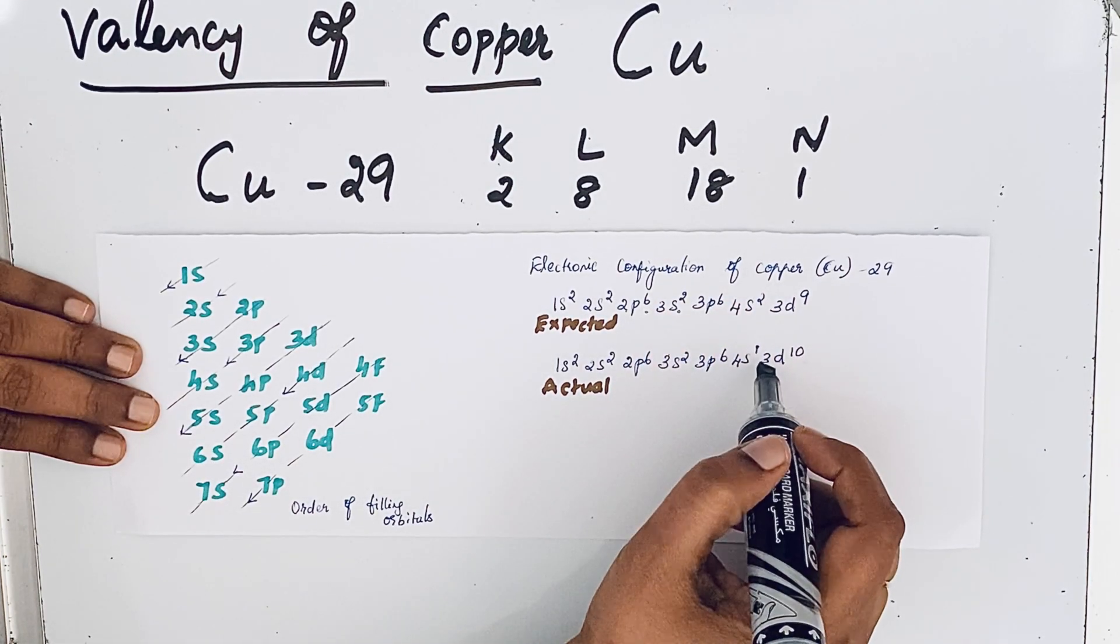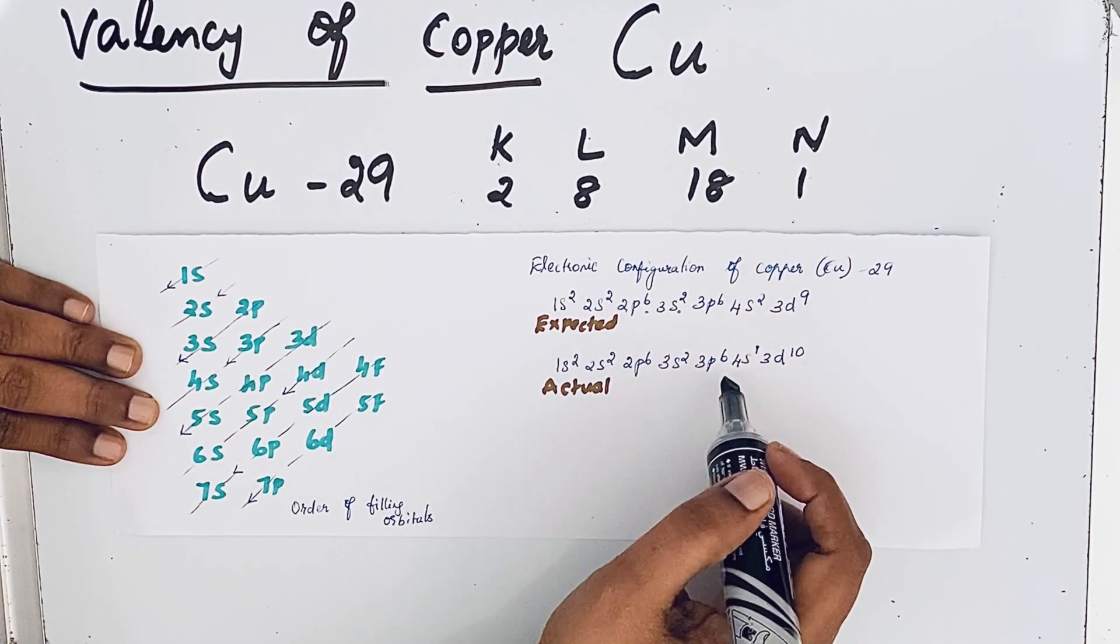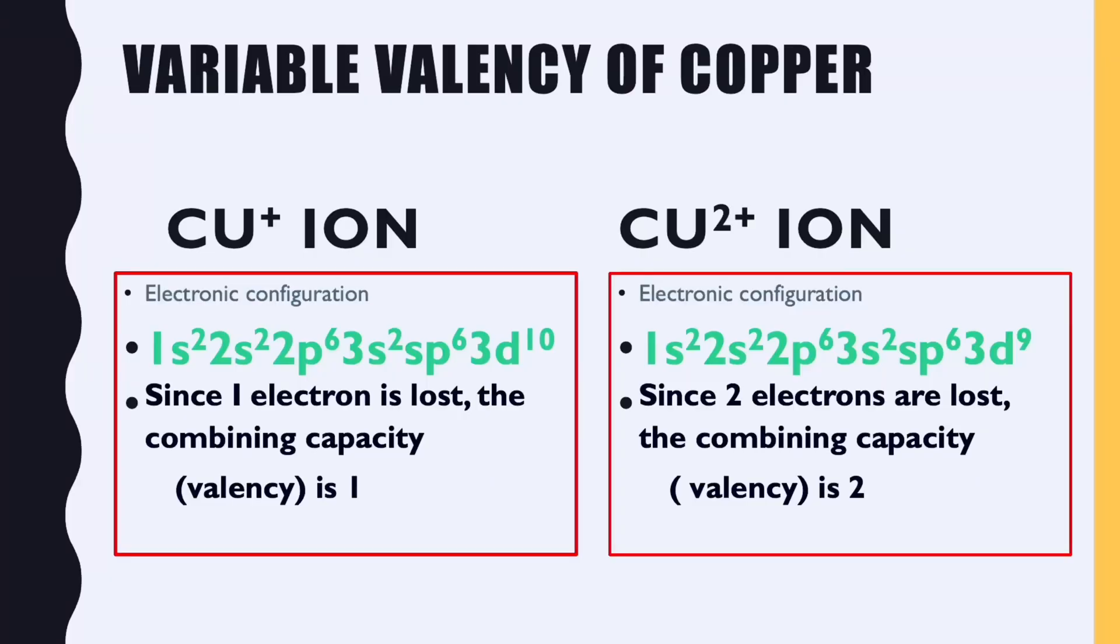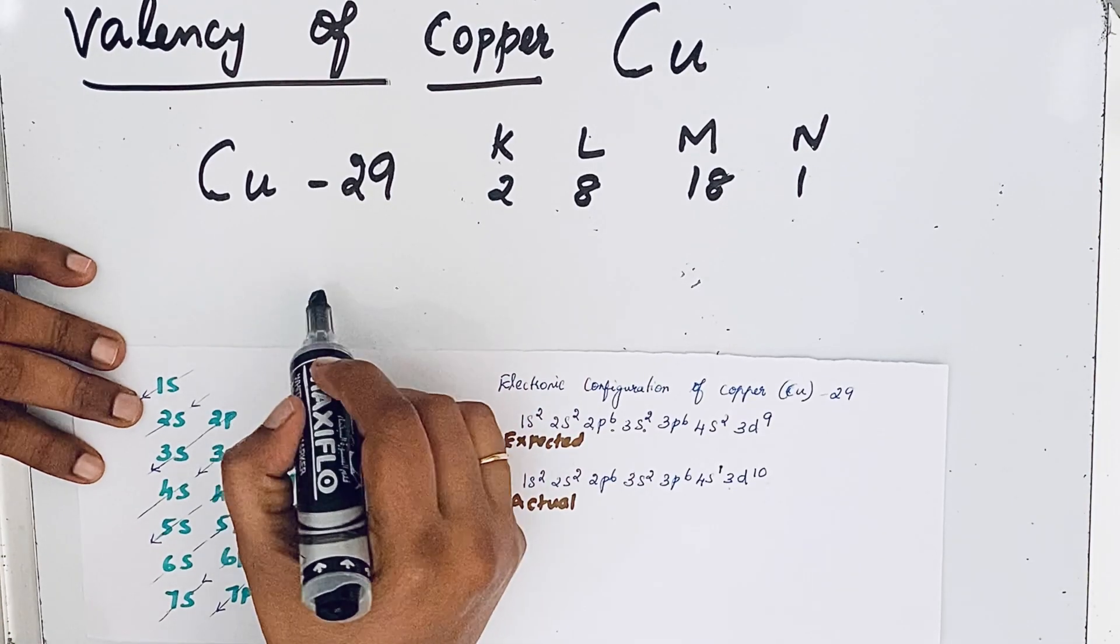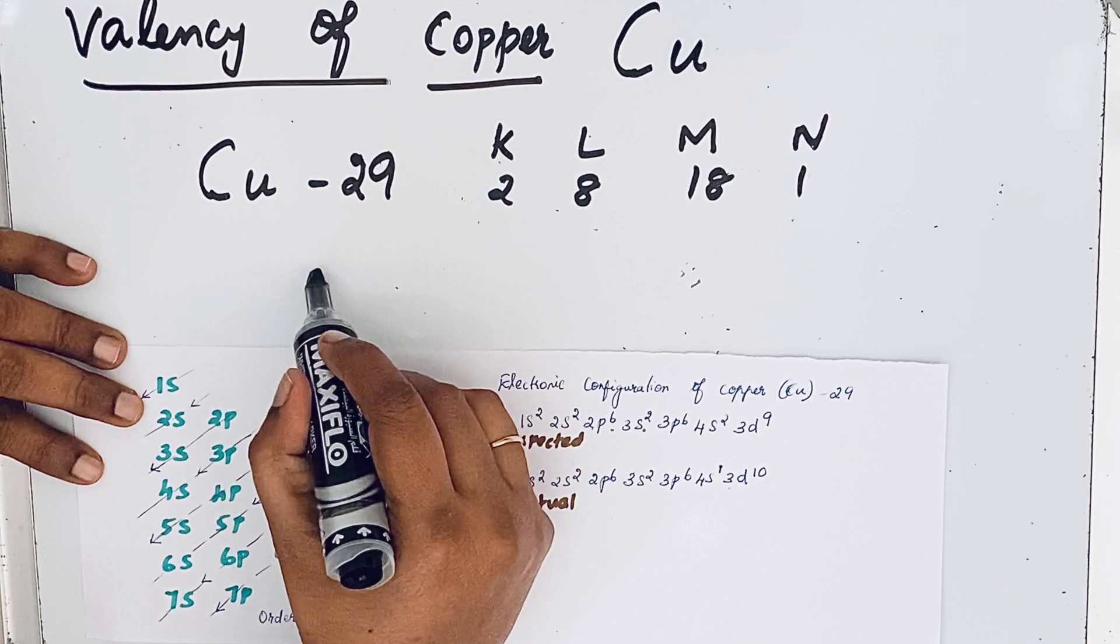This makes the difference in valency for copper. Due to that, we have valency 1 or 2. This is called variable valency. So the valency of copper is 1 or 2.